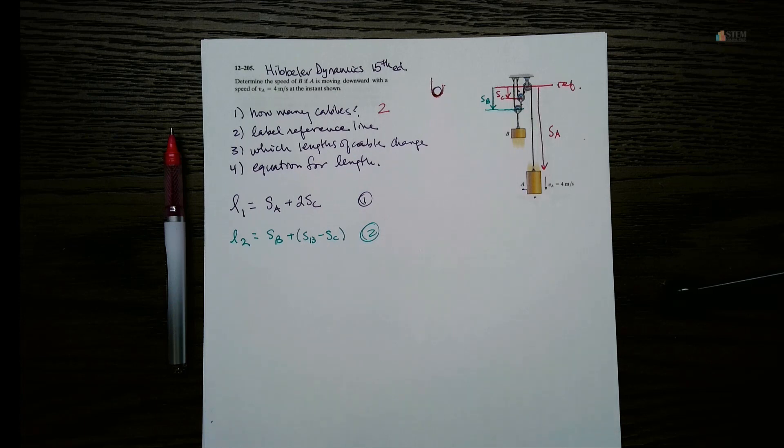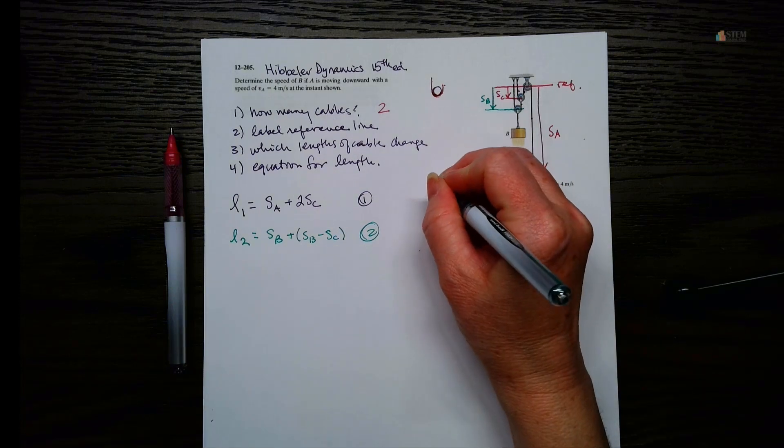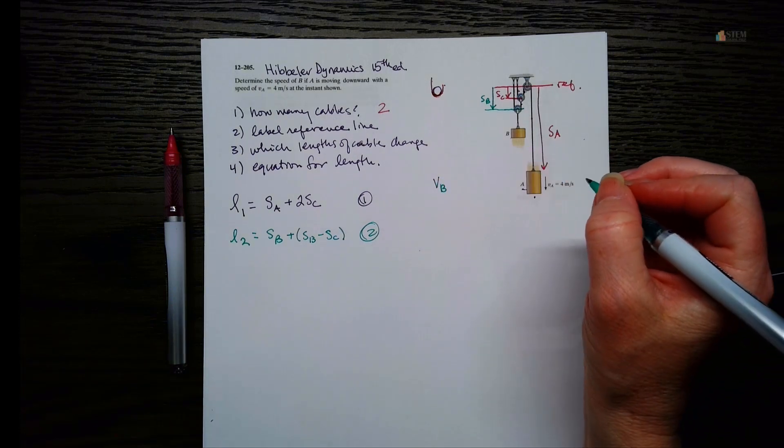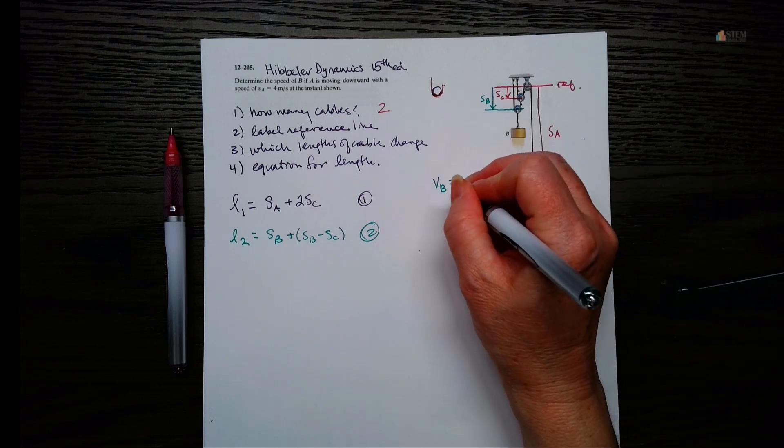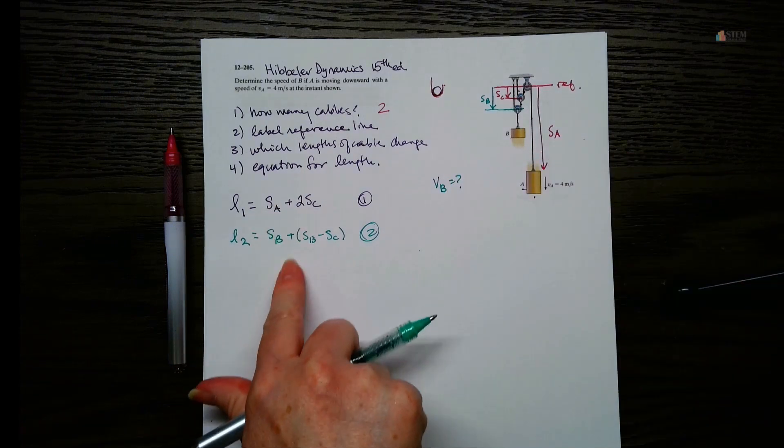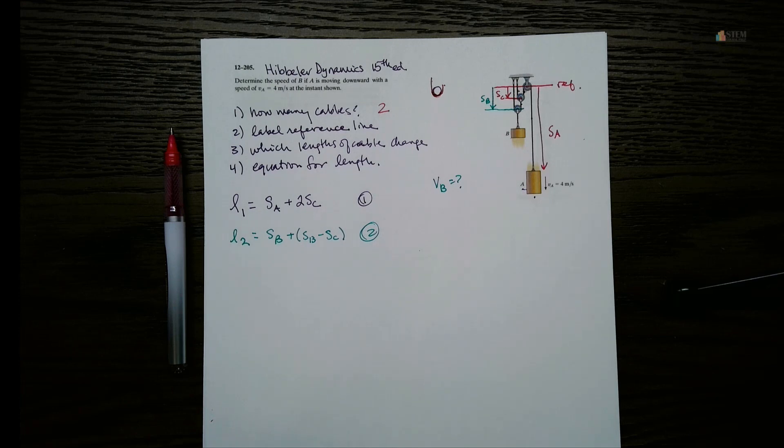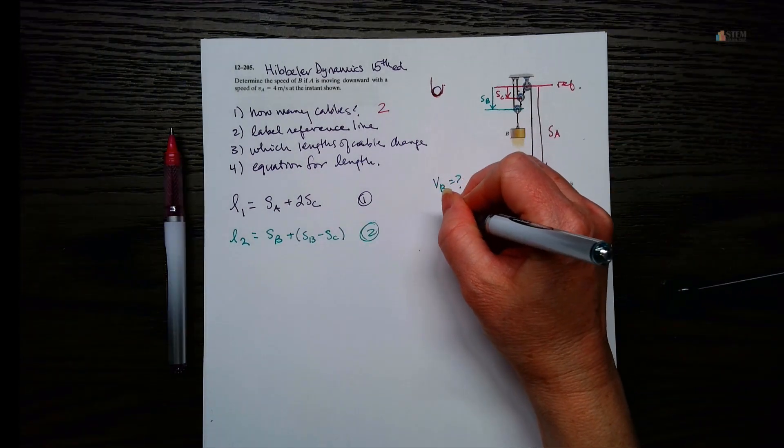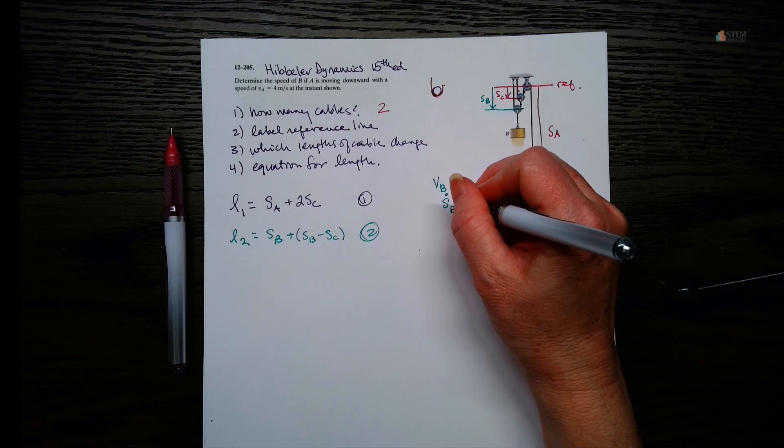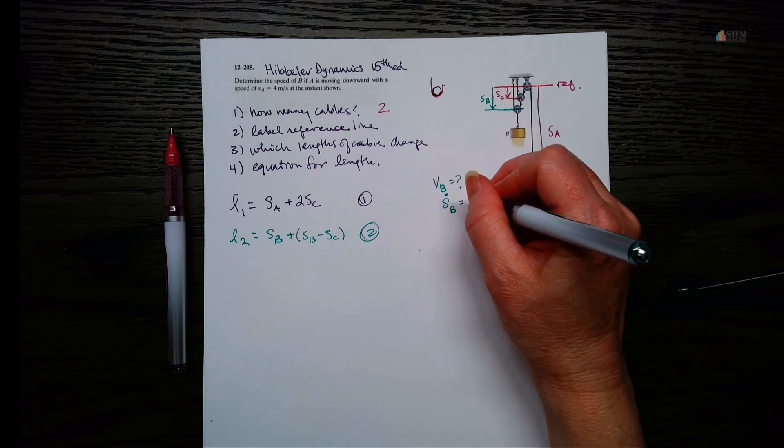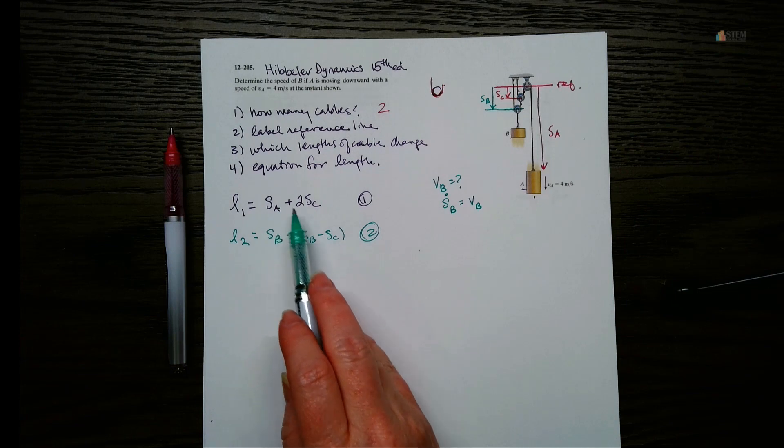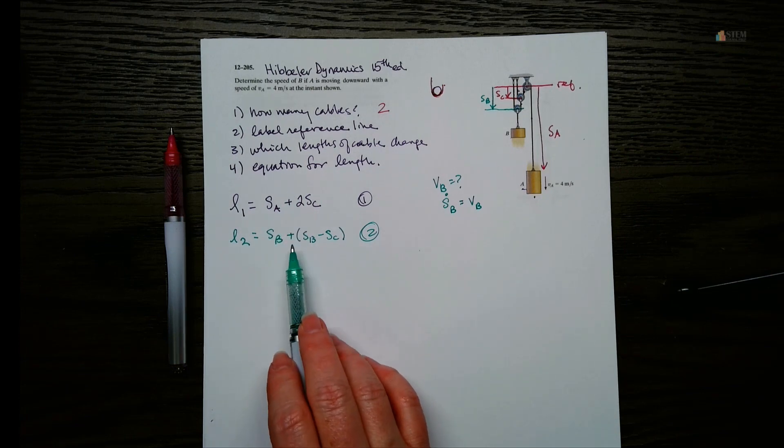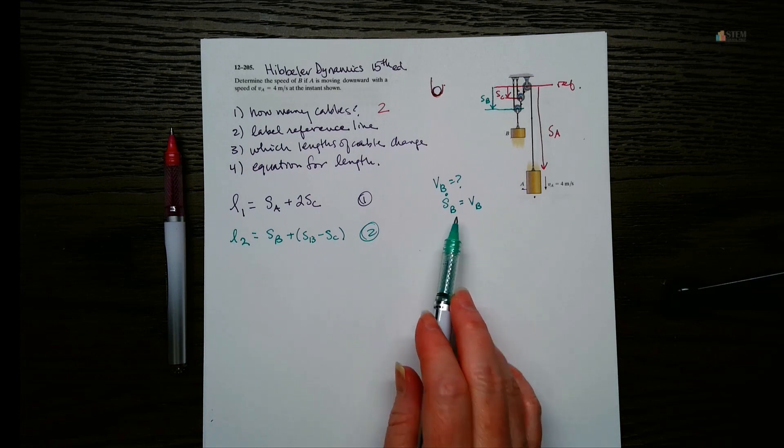Alright, now what we're wanting is the speed of B. Now, how can we use this set of equations to get that? Well, let's think about it. If I were to find the derivative of SB, what would that give me? Well, that's going to give me VB, right? So I'm going to use these two equations. We can simplify a little bit and then we'll be able to take the derivative.